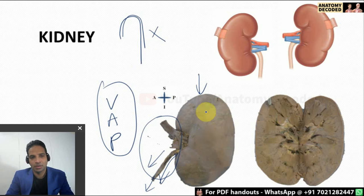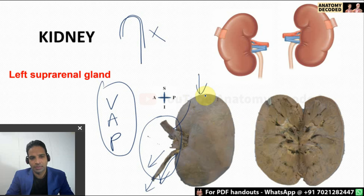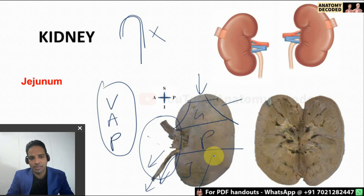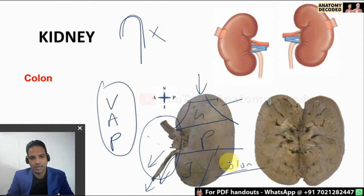The anterior relations of the left kidney: in this region there is the left suprarenal gland, then the splenic impression, then the gastric impression, then a large area for the pancreatic impression. On the medial aspect there is the jejunal impression, and on the lateral aspect there is the splenic flexure of the colon. These are the various relations on the anterior aspect of the left kidney.